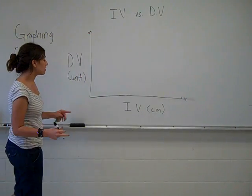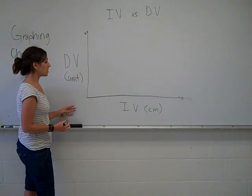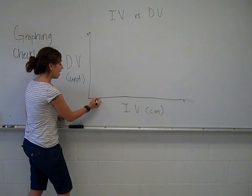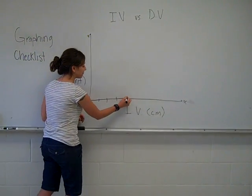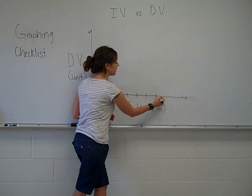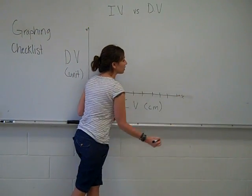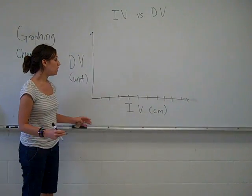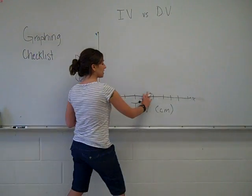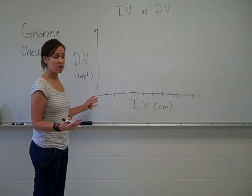A few other things. One thing you need to make sure that your scaling is right. So you have increments here. Your increments need to be measured with the ruler and they need to be equal. So you want to have it scaled out right so you can see your data well.